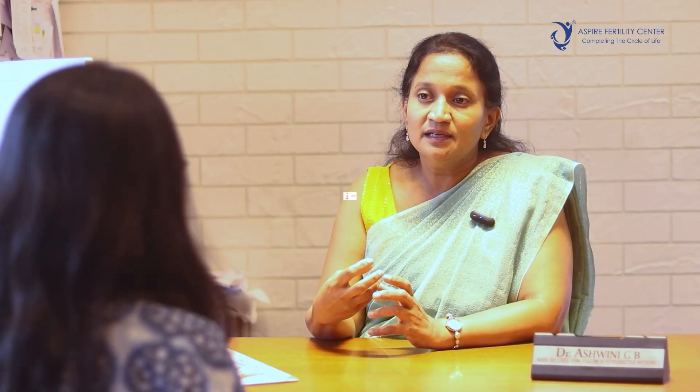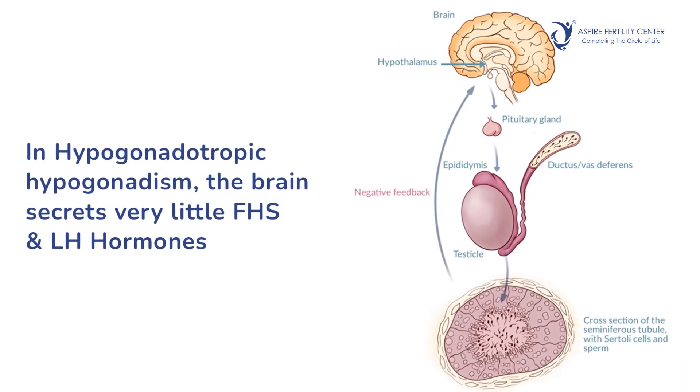With respect to testicular function, by knowing the hormones FSH and testosterone, we are able to sometimes interpret whether testicular malfunction is because of a malfunction inherent to the testes, or because the signal from the brain is lagging or being over-signaled. For example, hypogonadotropic hypogonadism is a condition wherein the brain secretes very minimal amounts of FSH and LH hormones, due to which the testes are also not performing as they should. And there is a condition called hypergonadotropic hypogonadism, wherein the testes itself is failing for some reason and there are very high levels of FSH. These tests help us understand where exactly the cause lies for an abnormal semen parameter.